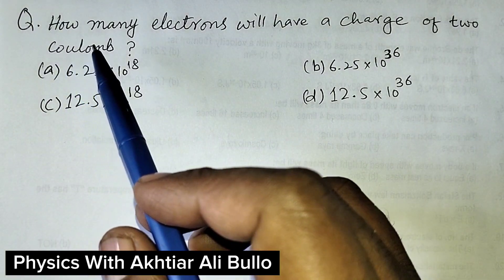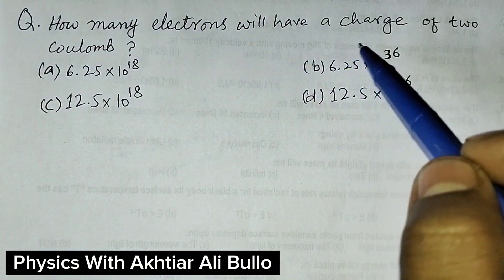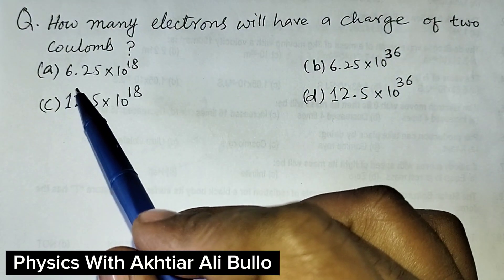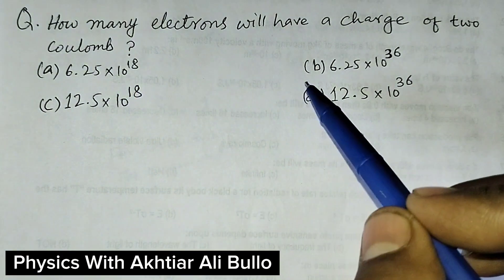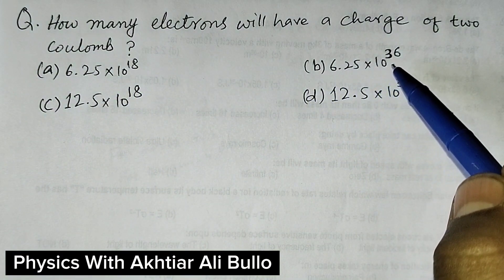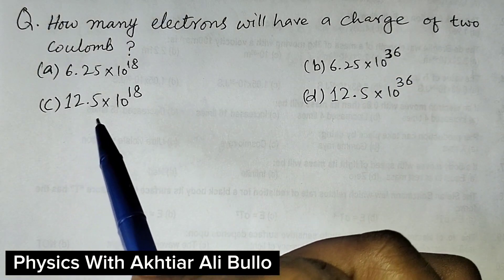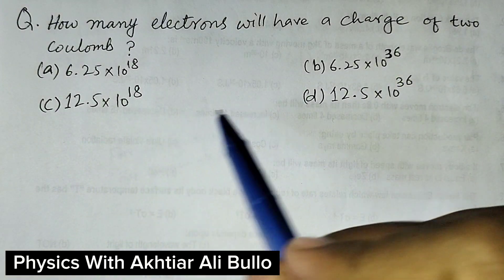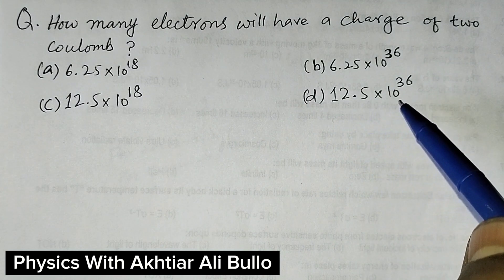The question is: how many electrons will have a charge of 2 coulombs? Option A: 6.25 into 10 raised to power 18. Option B: 6.25 into 10 raised to power 36. Option C: 12.5 into 10 raised to power 18. Option D: 12.5 into 10 raised to power 36.